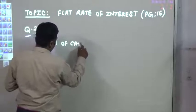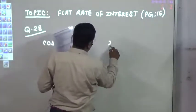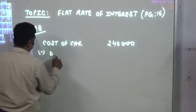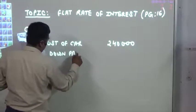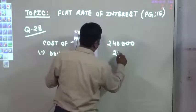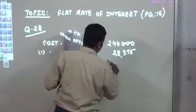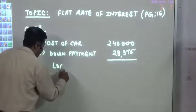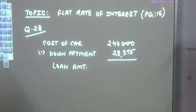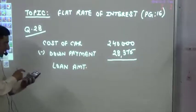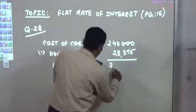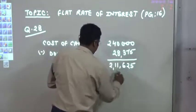Cost of car is 2,40,000. Minus the down payment of 28,375 — that amount was paid immediately. The remaining value becomes the loan amount. So: 2,40,000 minus 28,375. The loan amount is 2,11,625.